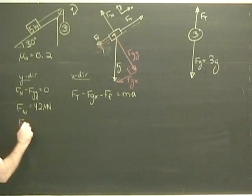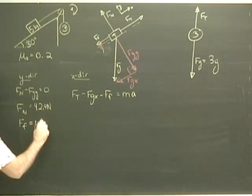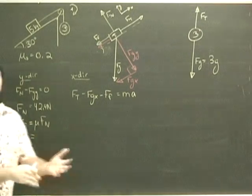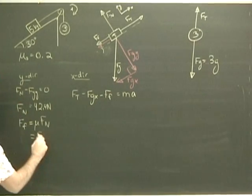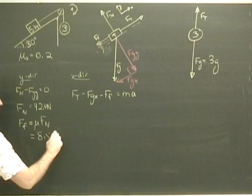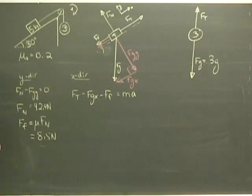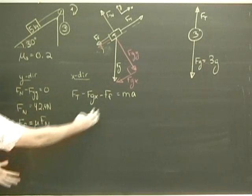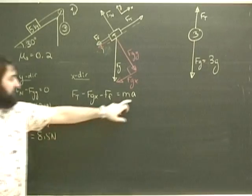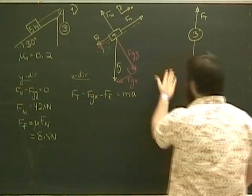Just like before, the force of friction is mu times Fn, and I'll just save you a little calculation - that works out to be 8.5 newtons. So now at least I can put friction back in here. I still don't know tension, I still don't know acceleration, so I'm going to need another equation.